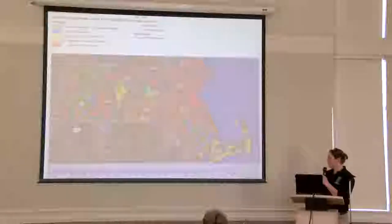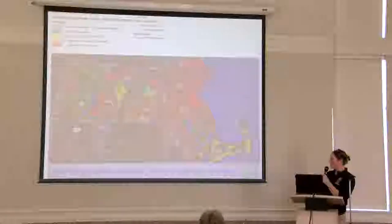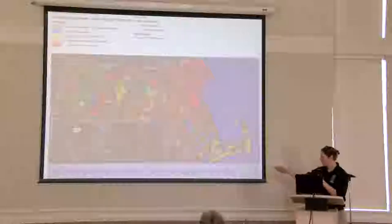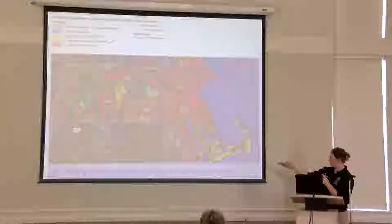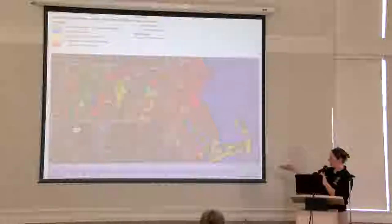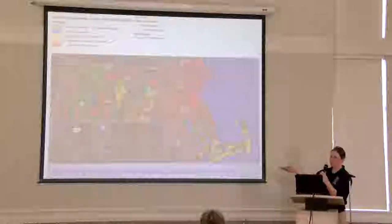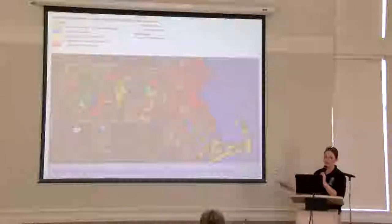Here's just a map of the impaired embayments within the town. Here's Mashpee right here. This little area right here is Bacoyet Bay. As you can see, we're extremely impaired.